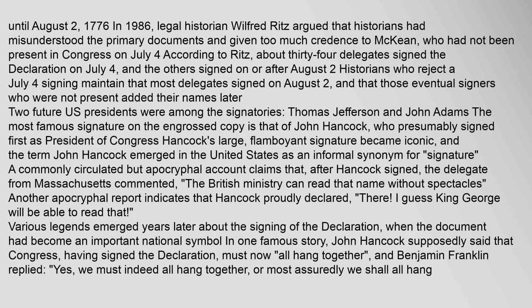Historians have generally accepted McKean's version of events, arguing that the famous signed version of the Declaration was created after July 19 and was not signed by Congress until August 2, 1776. In 1986, legal historian Wilfred Ritz argued that historians had misunderstood the primary documents and given too much credence to McKean, who had not been present in Congress on July 4. According to Ritz, about 34 delegates signed the Declaration on July 4, and the others signed on or after August 2. The most famous signature on the engrossed copy is that of John Hancock, who presumably signed first as President of Congress. Hancock's large, flamboyant signature became iconic, and the term 'John Hancock' emerged in the United States as an informal synonym for signature. A commonly circulated but apocryphal account claims that after Hancock signed, a delegate from Massachusetts commented, 'The British ministry can read that name without spectacles.' Another apocryphal report indicates that Hancock proudly declared, 'There. I guess King George will be able to read that.' Various legends emerged years later about the signing of the Declaration, when the document had become an important national symbol.